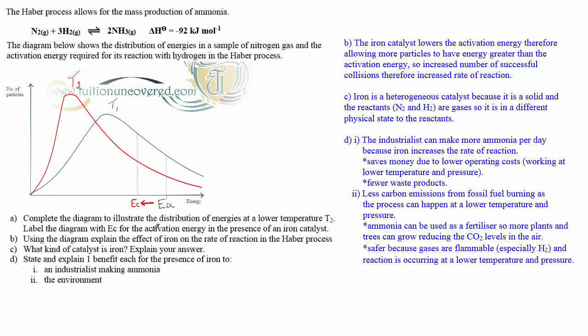Part B, using the diagram, explain the effect of iron on the rate of reaction in the Haber process. So having shown the presence of an iron catalyst lowering the activation energy, my answer. The iron catalyst lowers the activation energy, therefore allowing more particles to have energy greater than the activation energy, as shown here. So increasing the number of successful collisions, therefore increasing the rate of reaction.